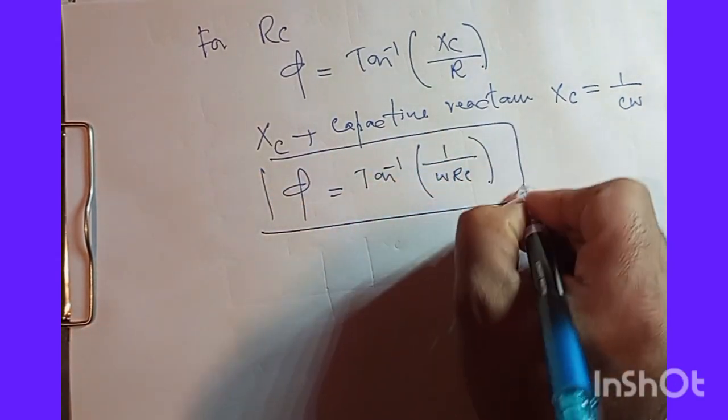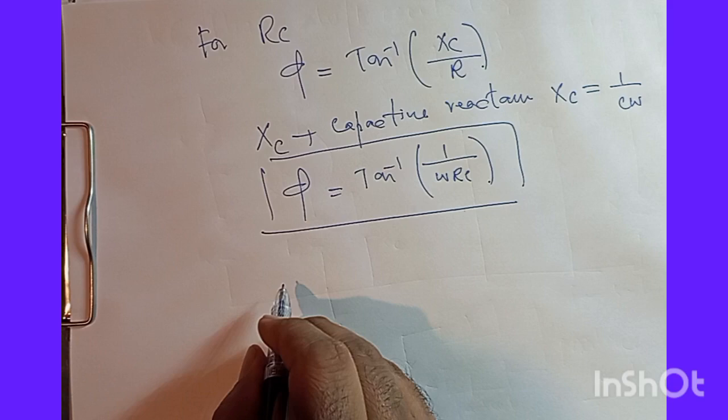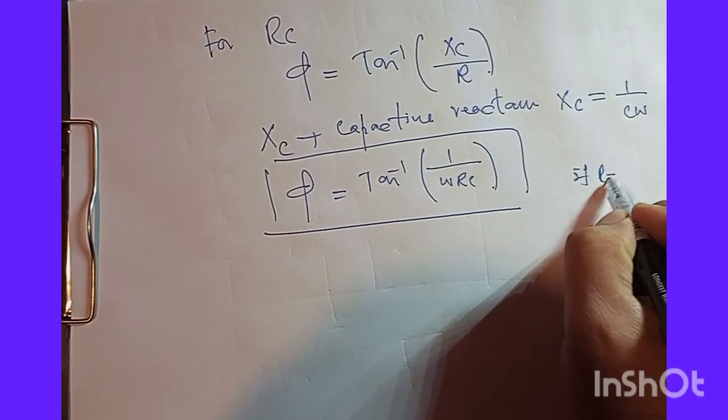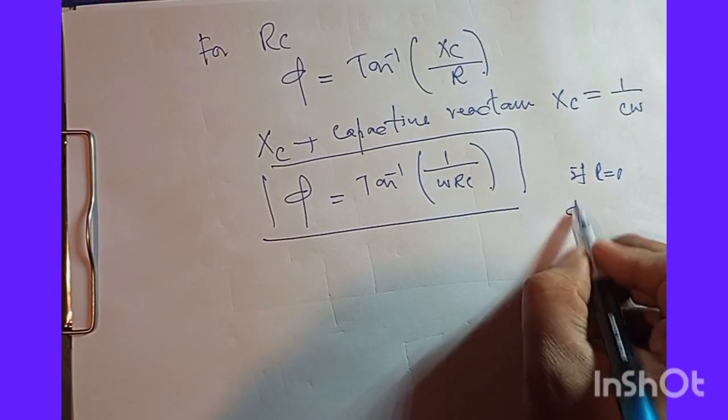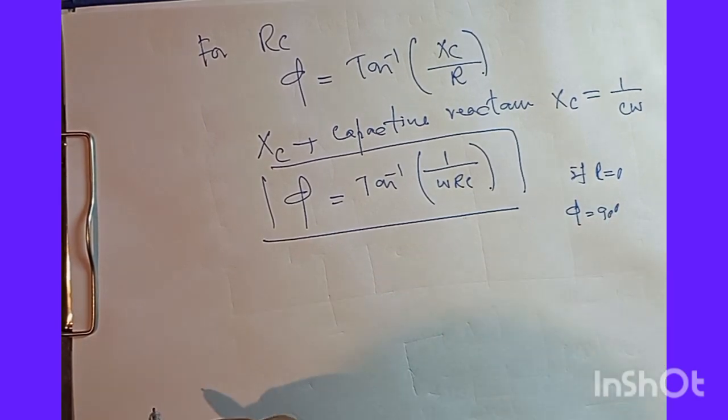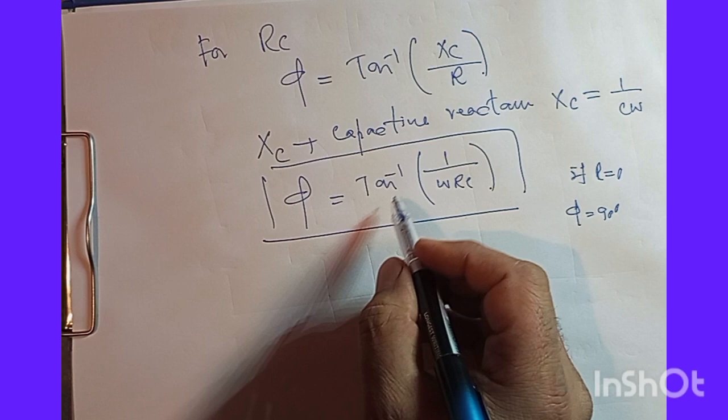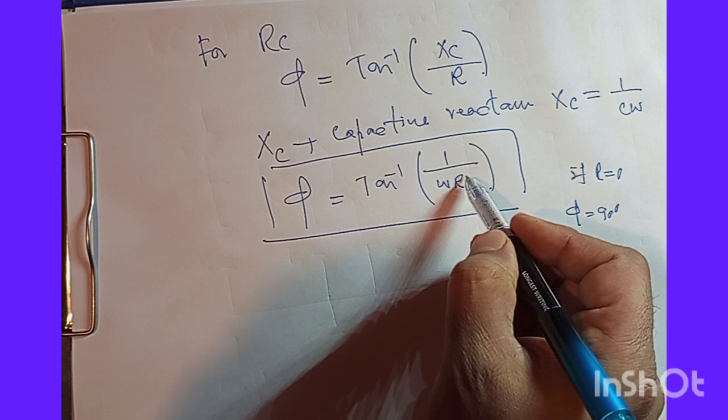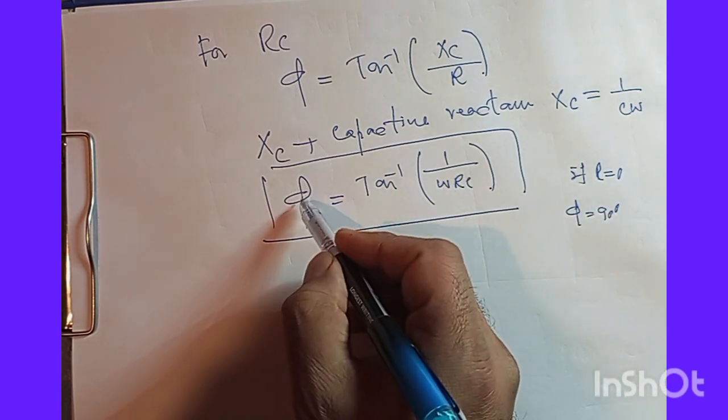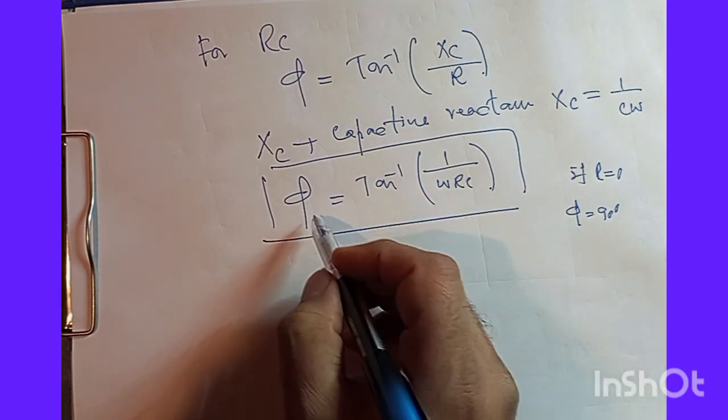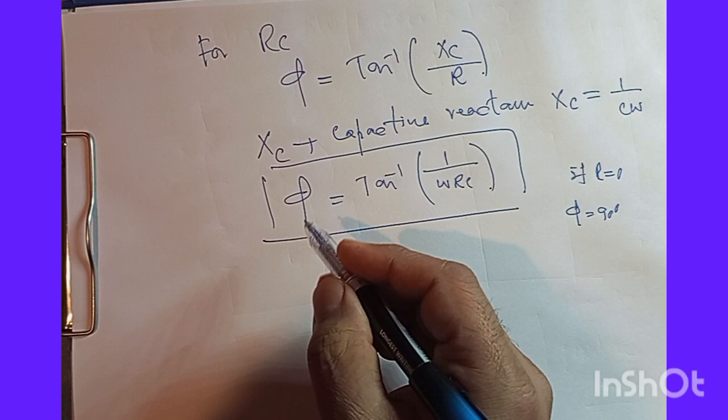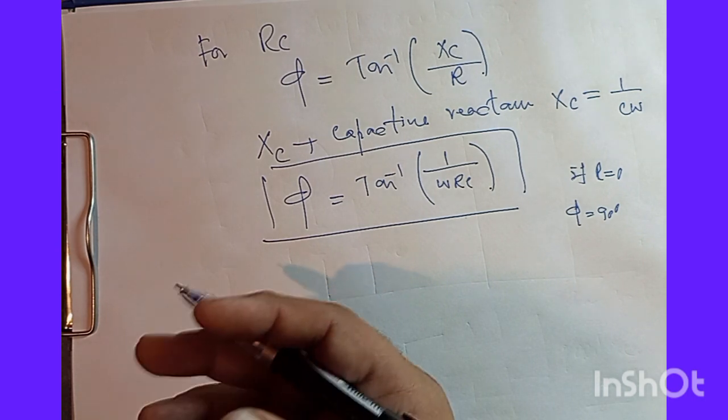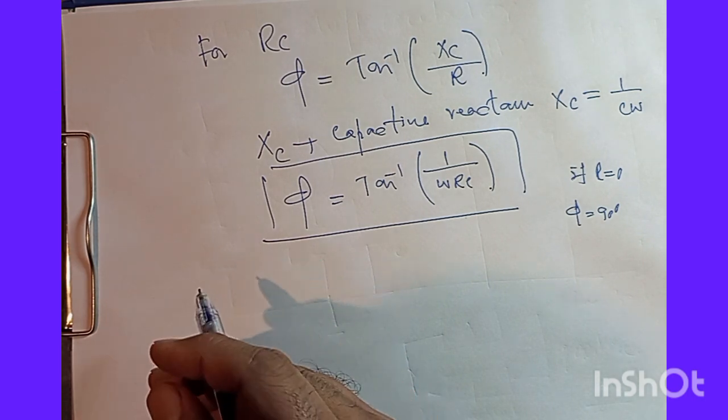Now we can see here that ideally, if I ideally talk about this equation, if I have R equal to 0, then φ will certainly be equal to 90 degrees. But the problem is that mathematically we have a situation here where we keep R equal to 0 and we will have the maximum value of φ equal to 90 degrees. But practically, ideally, that's not possible to have an RC circuit where I can have resistance equal to 0.